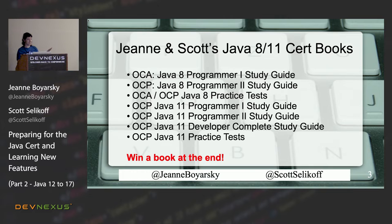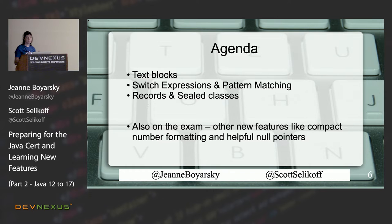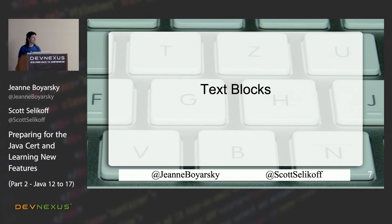Since you were all here before, you know who we are, you know there's going to be a book giveaway at the end. We're going to be covering three topics today: text blocks, switch expressions, pattern matching, and records and sealed classes. That's actually five topics in three sections. There are also other new features like compact number formatting and helpful null pointers that are not on the exam.